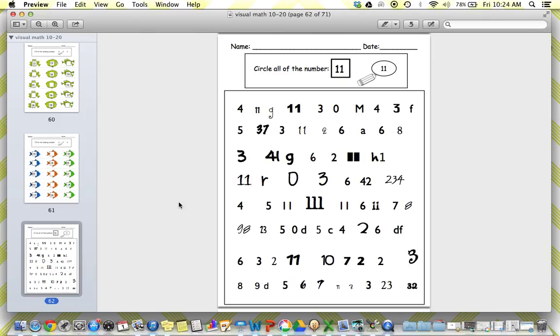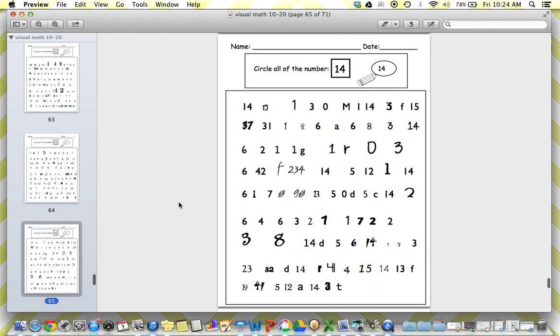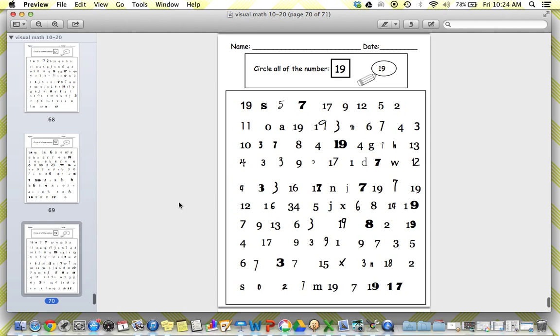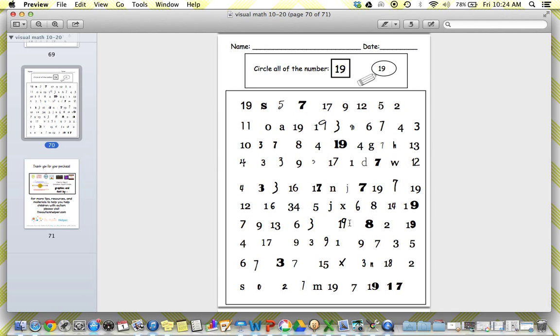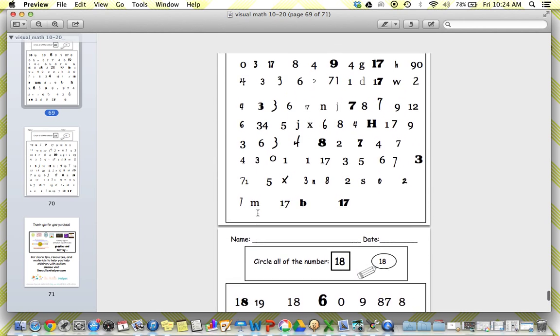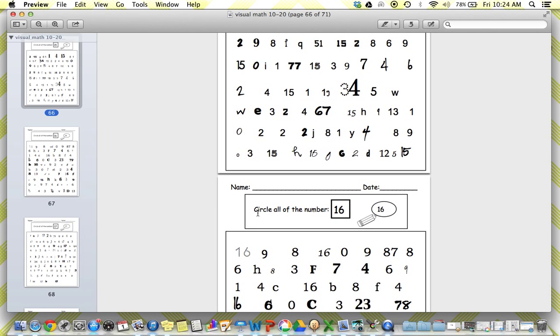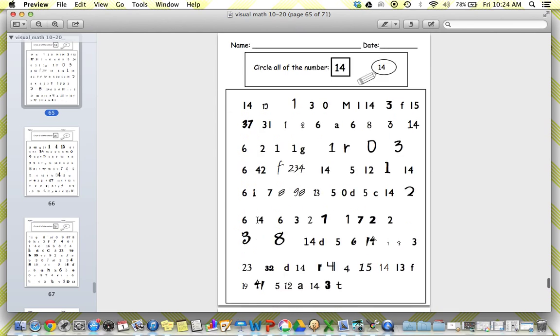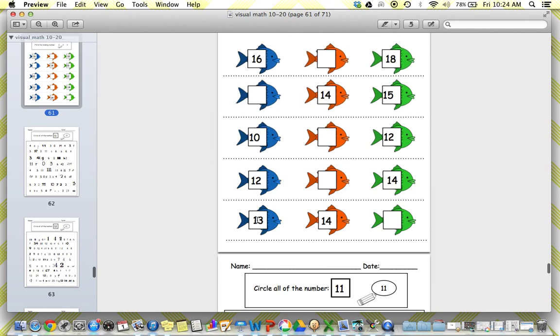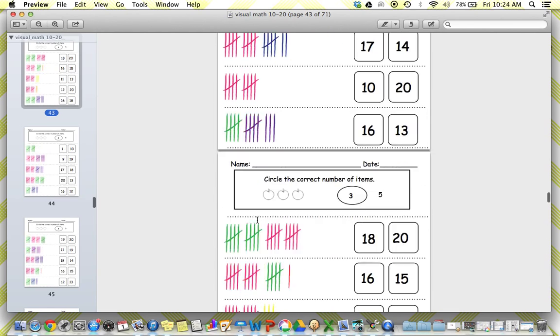And then again, this is same as with set one, just with 11 through 20, circling the number. So finding all the 11s, 12, 13, all the way through 20. So again, really looking at that visual attention. You don't need to write it to know how to do this. You can use a highlighter. You can laminate these and use these with a dry erase marker, which is what I do. They're a great activity for the last few minutes of downtime before you rotate. I love these for that. I've had a lot of teachers that tell me they use these for homework, which I think is awesome as well.